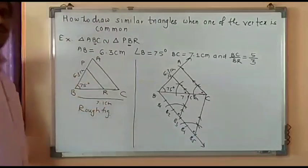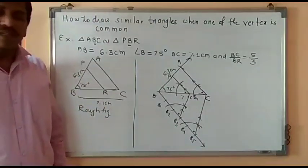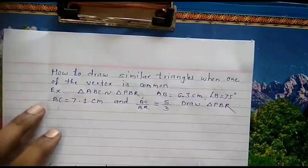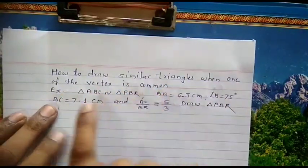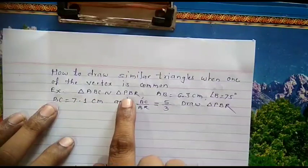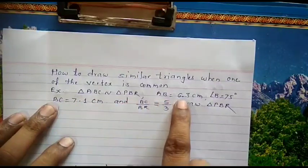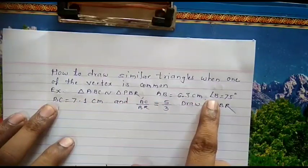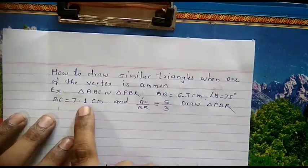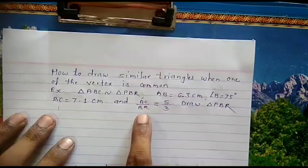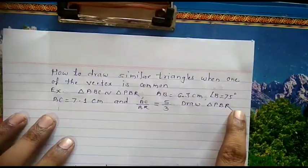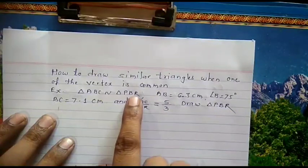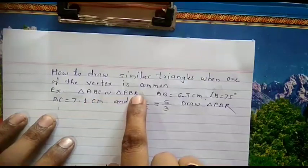Now we will actually draw this construction. How to draw similar triangles when one of the vertices is common. Example: Triangle ABC is similar to triangle PBR. AB is 6.3 cm, angle B is 75 degrees, BC is 7.1 cm, BC upon BR is 5 upon 3 — draw triangle PBR. Here, point B is common; these are triangles with a common vertex.